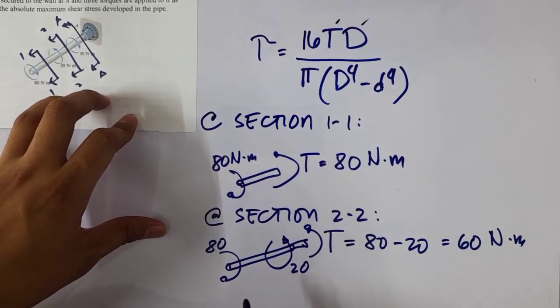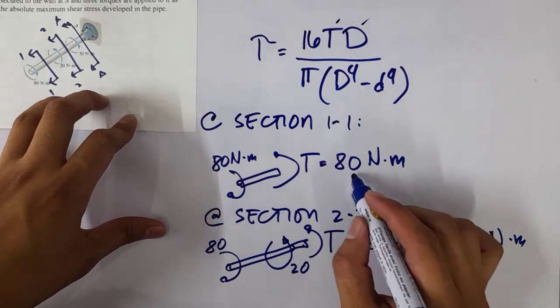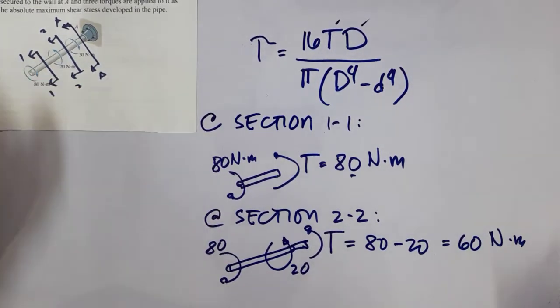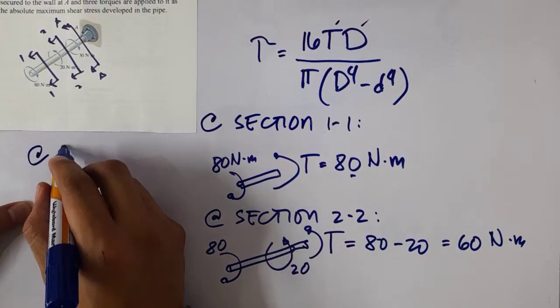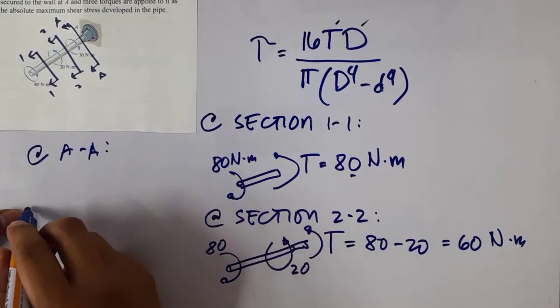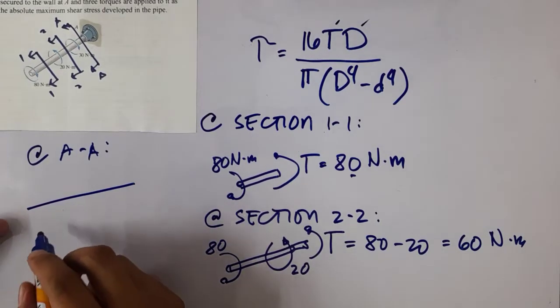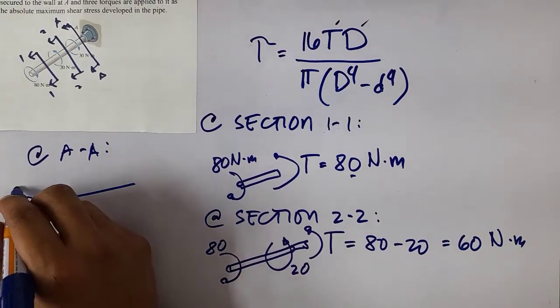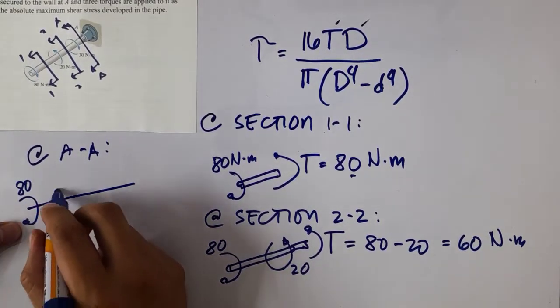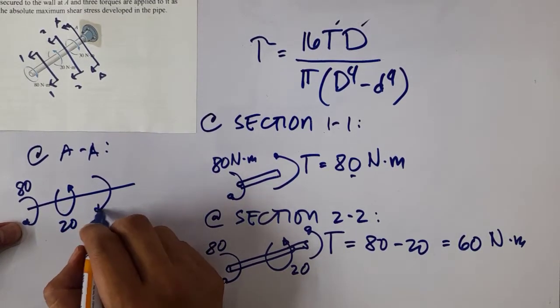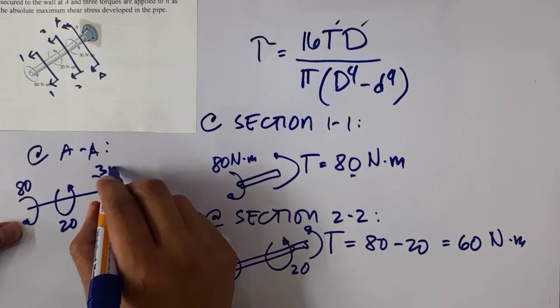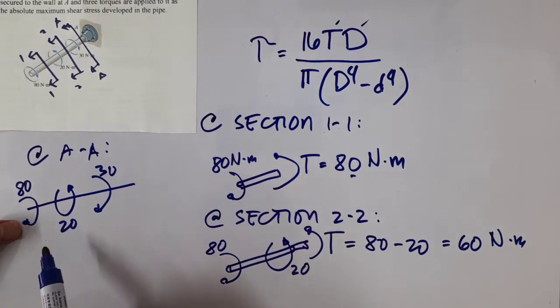So far, our larger torque is 80 compared to the 60. So proceed with section AA. You have 80, then you have 20, and then you have 30. This is the internal.